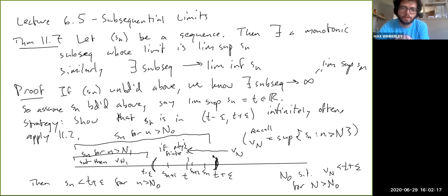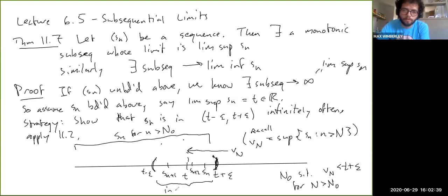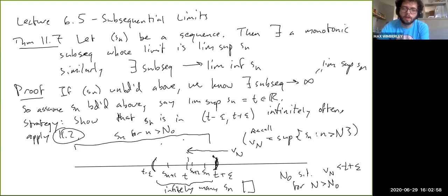That means there are infinitely many values of n such that Sn is in the interval (T − ε, T + ε). By Theorem 11.2, that means there is a monotonic subsequence which converges to T, which is what we wanted. The argument for the lim-inf is similar. So that does it for this video. See you in the next one.